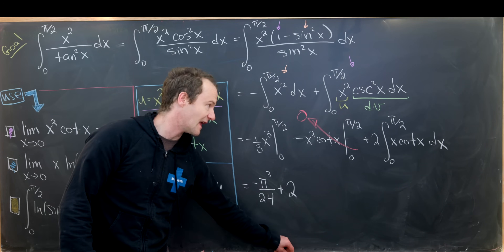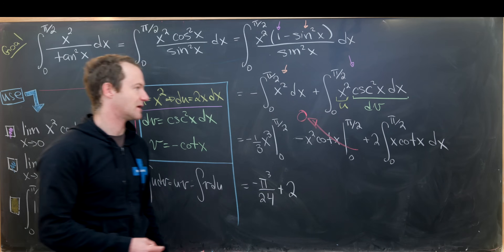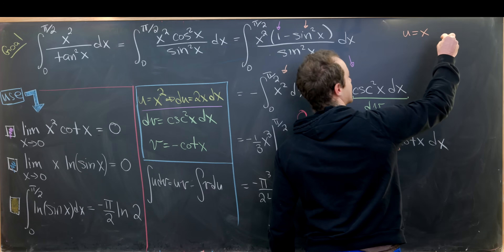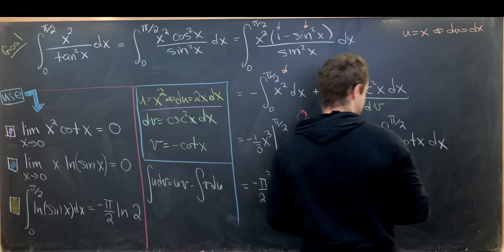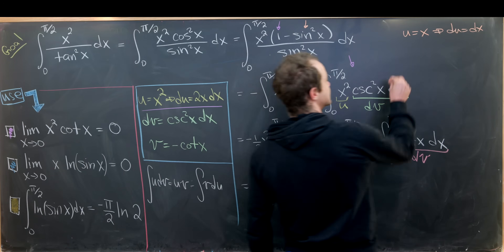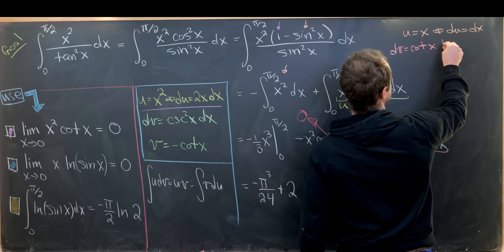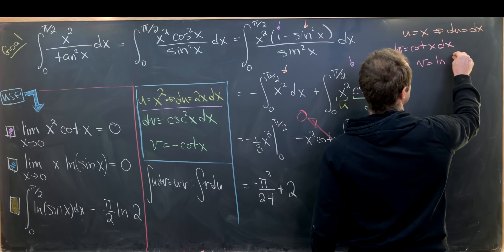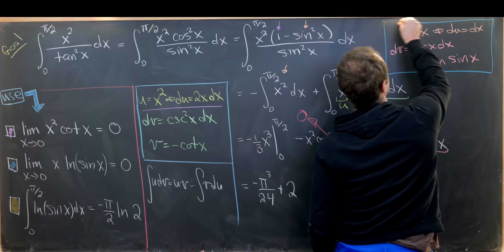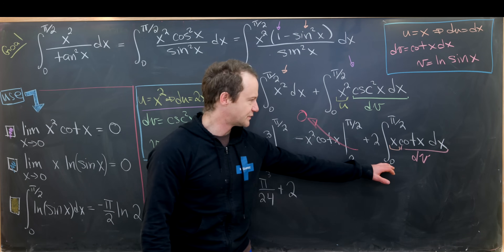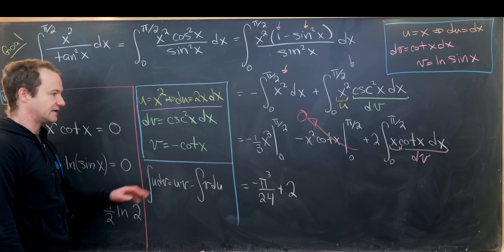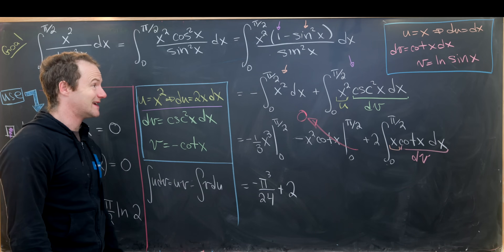For ∫₀^{π/2} x·cot(x) dx we do another integration by parts: u = x, du = dx, dv = cot(x) dx, v = ln(sin x). Strictly it's ln|sin x|, but sin is positive on (0, π/2) so no absolute value is needed. Applying the formula gives u·v = x·ln(sin x) evaluated from 0 to π/2.